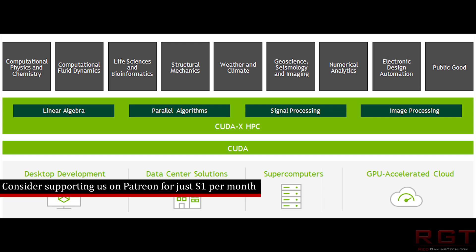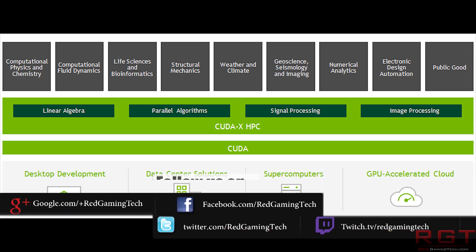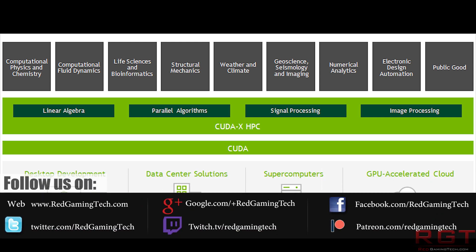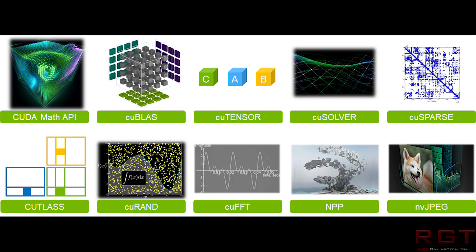Essentially, CUDAX HPC is to give developers the tools needed to help them along their way to the next scientific breakthrough — from everything from fluid dynamics and weather simulation to computational chemistry. All sorts of domains are being covered here, and CUDAX HPC is in its essence a collection of libraries, tools, compilers, and APIs that will help developers solve some very challenging problems.